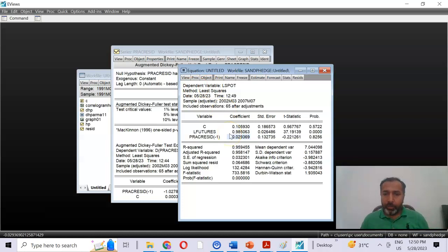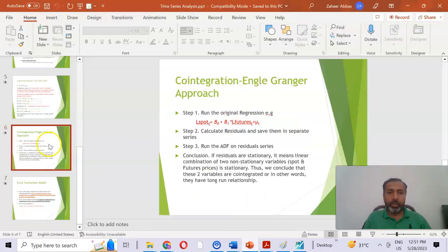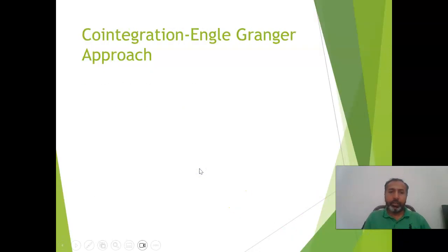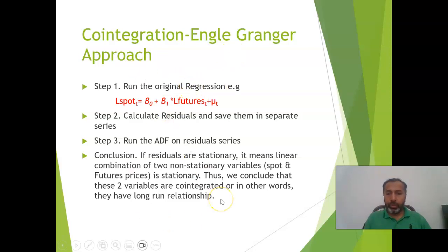One limitation of this approach is that although the Engle-Granger approach of co-integration is easy and simple to use, it can only measure one co-integrating equation. In this case it is fine because we have only two variables and the maximum number of co-integrating equations can be one. However, when we have more than two variables, there can be more than one co-integrating equation. Therefore, many people prefer to use the Johansen approach of co-integration instead of the Engle-Granger approach.